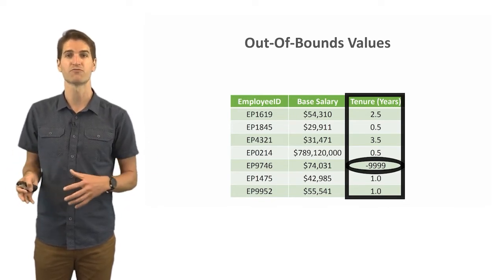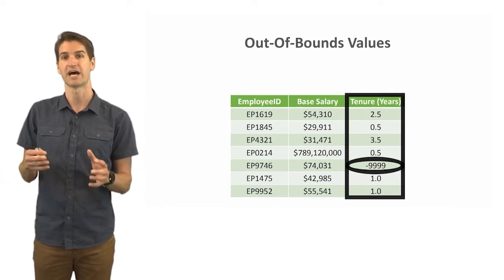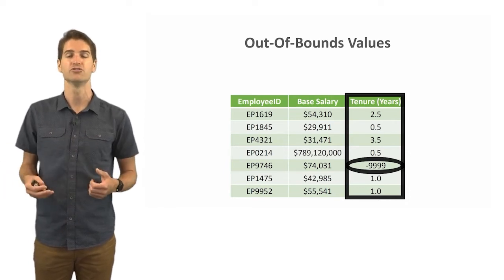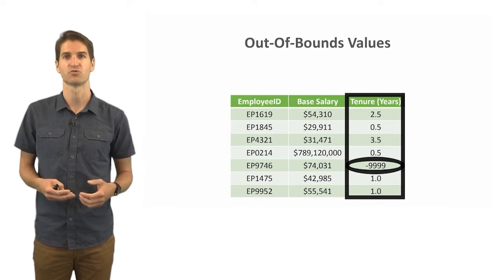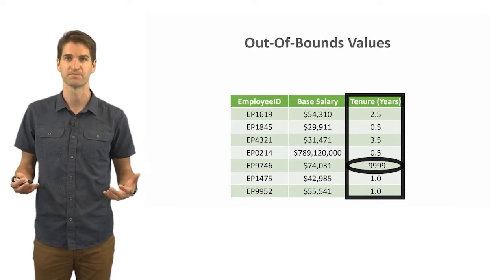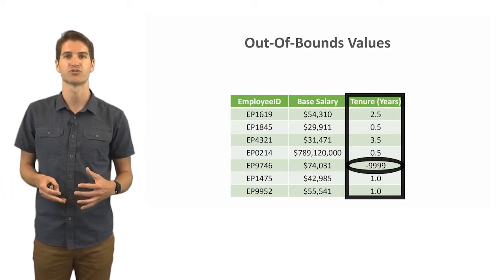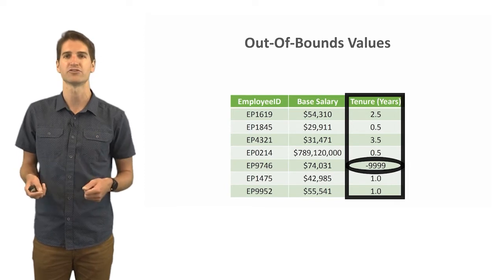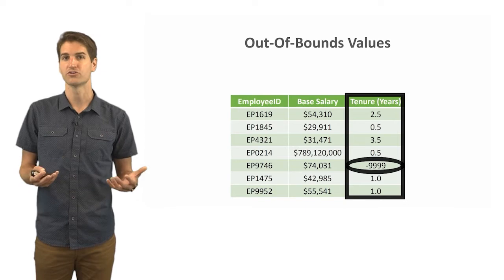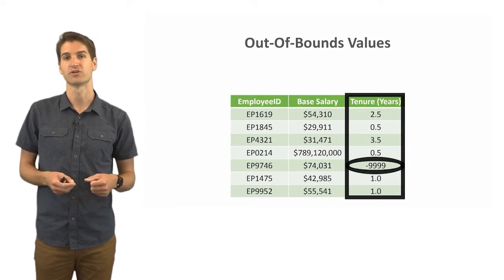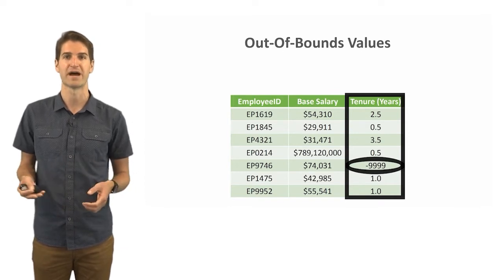Some statistical software programs will actually allow you to code these such that it'll treat the negative 9,999 or whatever you code as missing as a missing value and won't include it in subsequent descriptive and inferential statistics that you run. In this case, let's assume we don't have that in place, so we would want to make sure that we delete this or perhaps put whatever missing value code is applicable. Some packages such as R use the NA and that is going to represent a missing value.